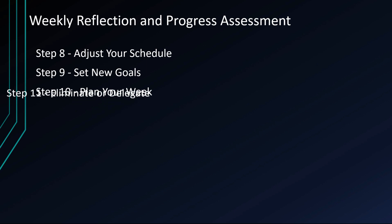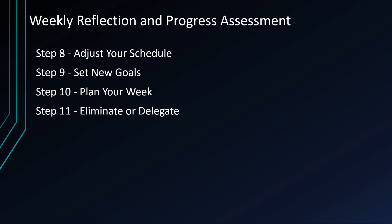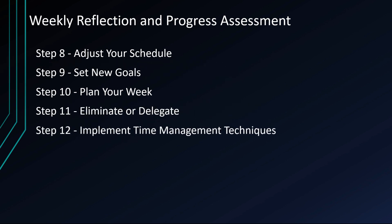Step 11: Eliminate or delegate. Consider whether there are tasks or responsibilities you can eliminate or delegate to others to free up more of your time for higher-priority activities. Step 12: Implement time management techniques. If you identified specific time management challenges during your reflection, incorporate relevant strategies to address them in the coming week. For example, if you struggle with procrastination, implement the Pomodoro technique or set specific deadlines.